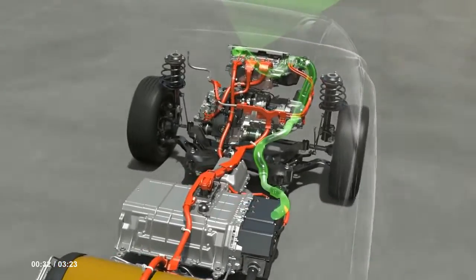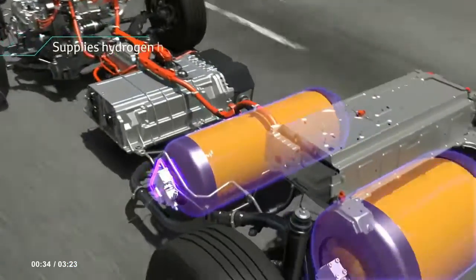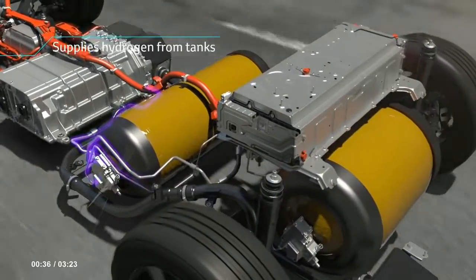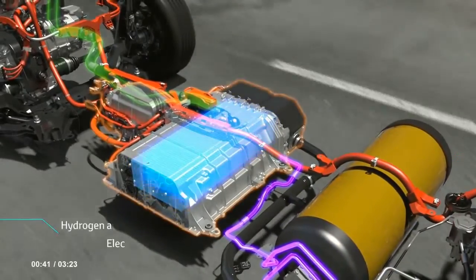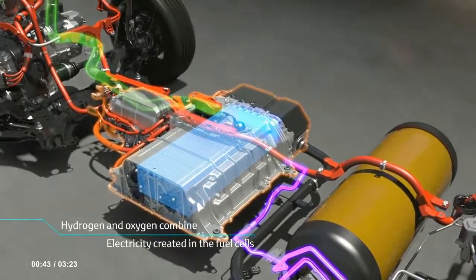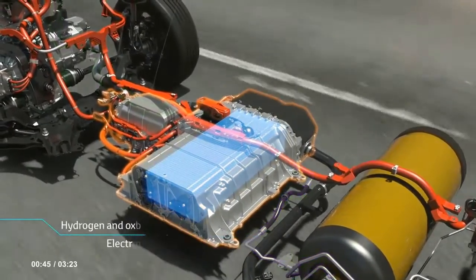Hydrogen and oxygen create electricity which powers the motor without burning hydrogen. The only emission while driving is water and no carbon dioxide is emitted. The motor provides exceptionally smooth acceleration making the FCV fun to drive.